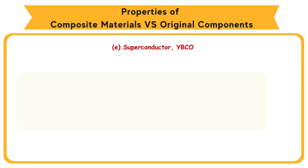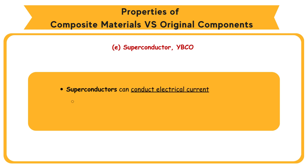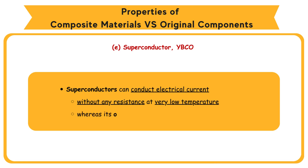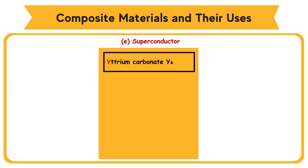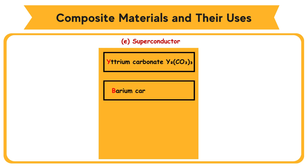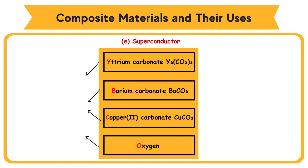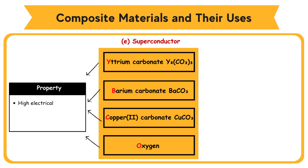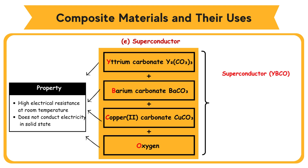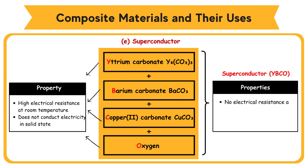E: Superconductor YBCO. Superconductors can conduct electrical current without any resistance at very low temperature, whereas their original components cannot. Original components: yttrium carbonate (Y₂(CO₃)₃), barium carbonate (BaCO₃), copper(II) carbonate (CuCO₃), and oxygen. Property: high electrical resistance at room temperature, does not conduct electricity in solid state. However, a mixture of them produces the superconductor YBCO. Superconductor properties: no electrical resistance at very low temperature; conducts electricity at zero resistance at negative 180 degrees Celsius.